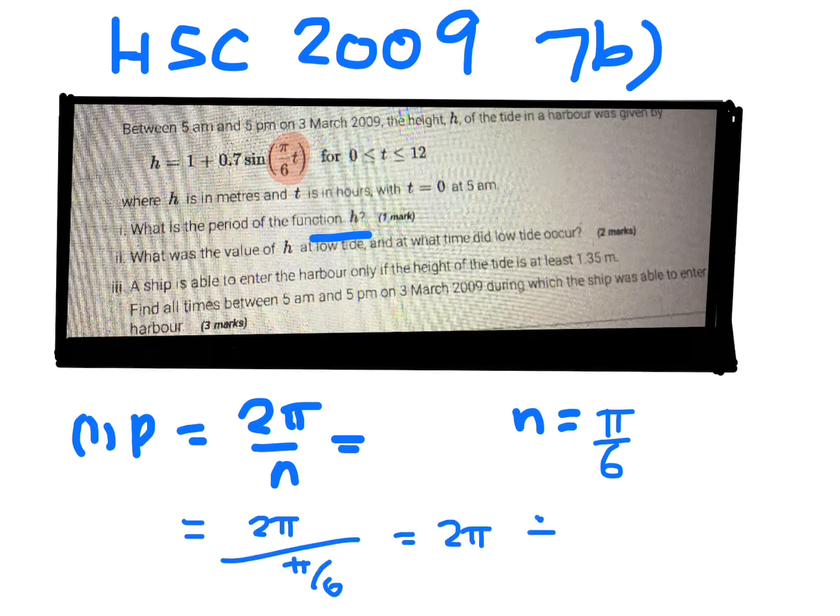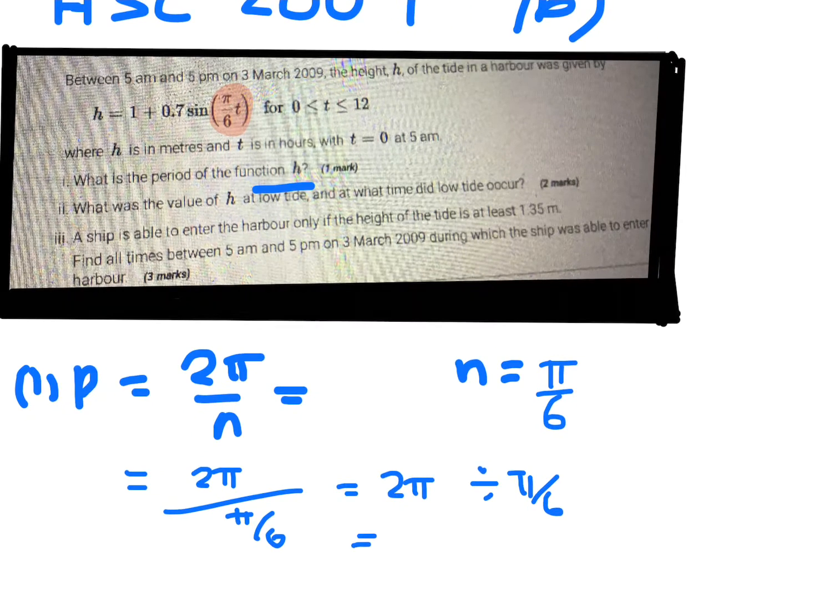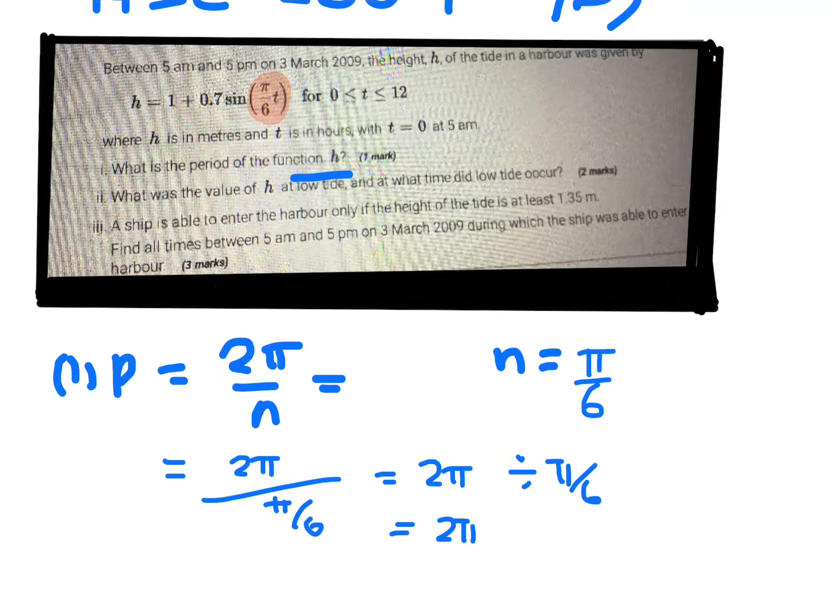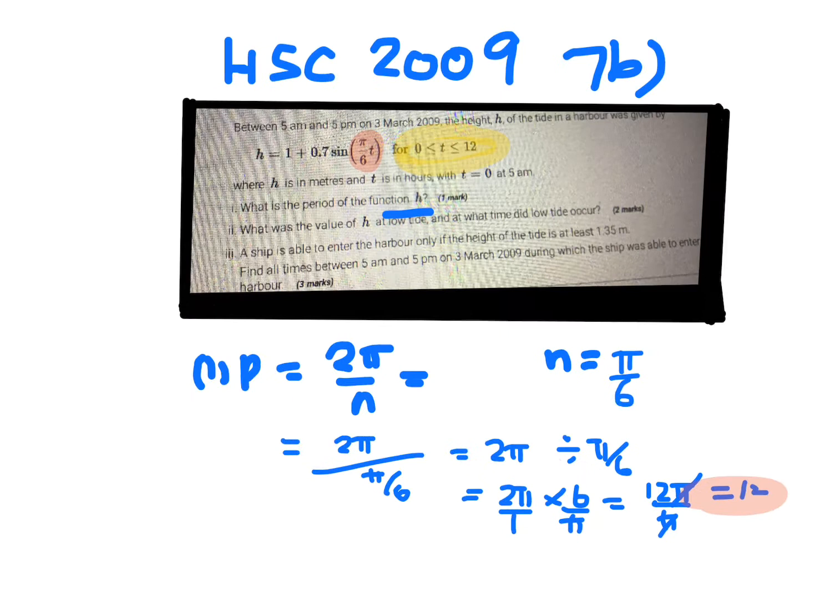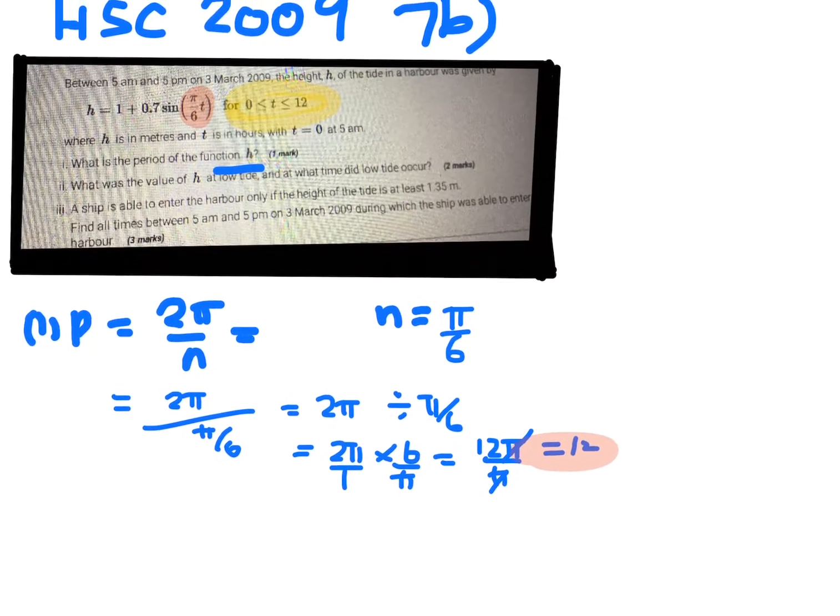So if you do 2π over π on 6, that's 2π divided by π on 6, which is basically 2π times 6 on π. So 2π on 1, so that's 12π on π. The π's go out, so it would be 12. So that means that the period is basically 12. So it means after 12 seconds, it will repeat itself. Notice the domain is also from 0 to 12.